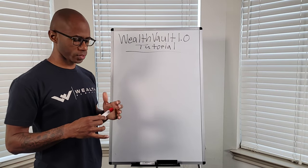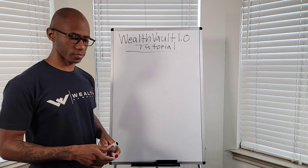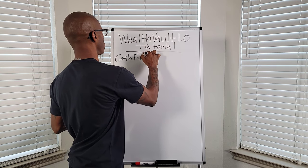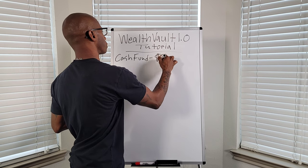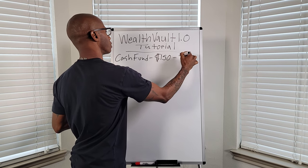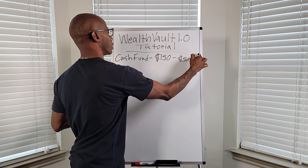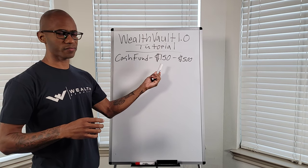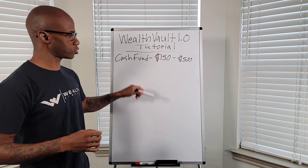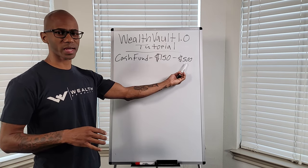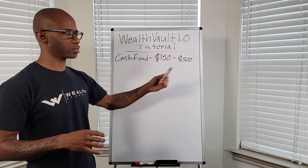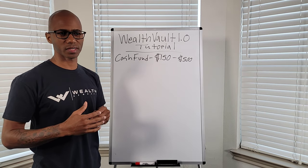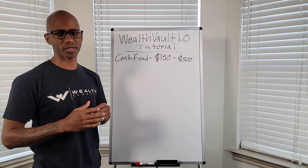So let's talk about the cash fund and your first emergency fund. Your cash fund — you're going to put $150 to $500. I always start with the $150. After you get to WealthVault 2.0 and start paying your debt off, once you're done, you can come back and max this account out to $500. The cash fund is a small-size emergency fund for immediate emergencies.